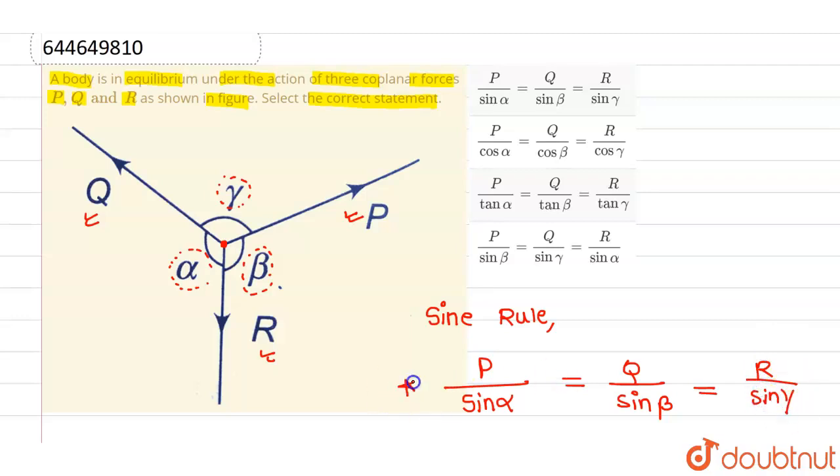This is the sine rule that we must remember in order to solve multiple questions. The correct statement from all these options is P by sine alpha equals to Q by sine beta equals to R by sine gamma which is written in option 1.